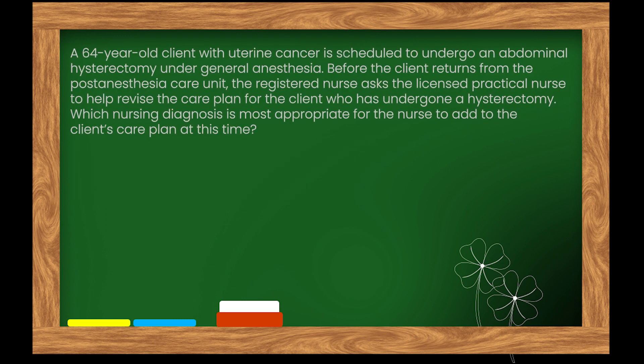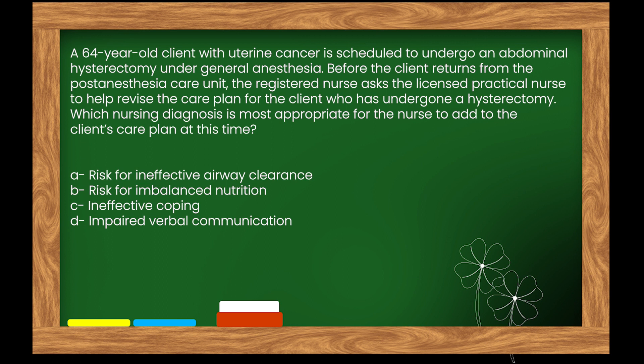Here is our next question. A 64-year-old client with uterine cancer is scheduled to undergo an abdominal hysterectomy under general anesthesia. Before the client returns from the post-anesthesia care unit, the registered nurse asks the licensed practical nurse to help revise the care plan. Which nursing diagnosis is most appropriate to add at this time? Options: A. Risk for ineffective airway clearance. B. Risk for imbalanced nutrition. C. Ineffective coping. D. Impaired verbal communication.